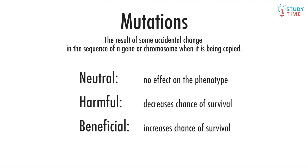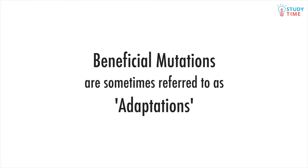Beneficial mutations result in a phenotype that helps an organism to survive. Organisms that are more likely to survive are more likely to reproduce and pass those beneficial mutations onto their children, helping them also.